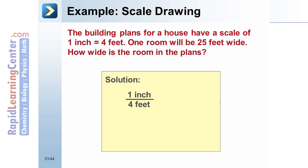inch to 4 feet. Create a proportion by setting it equal to x inches to 25 feet. Cross multiply to get 25 equals 4x. Divide both sides by 4. The room is 6.25 inches in the building plans.